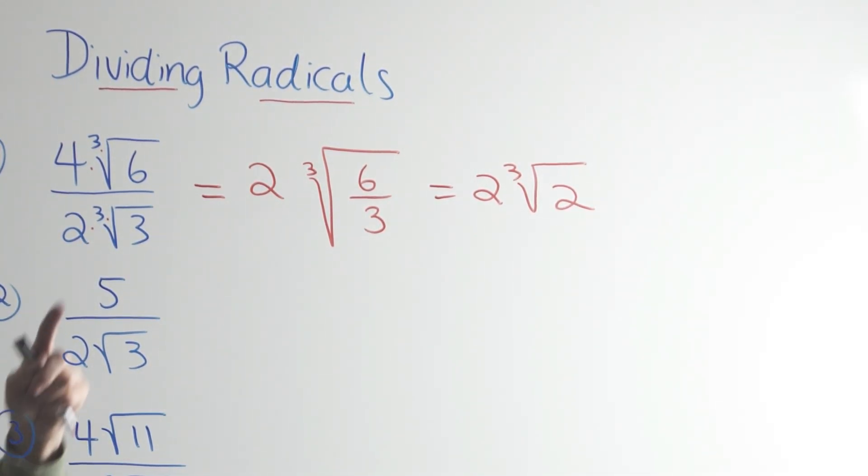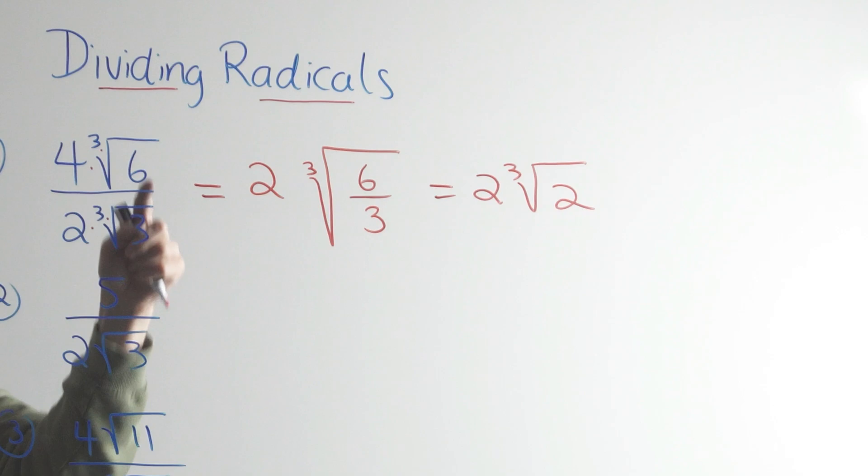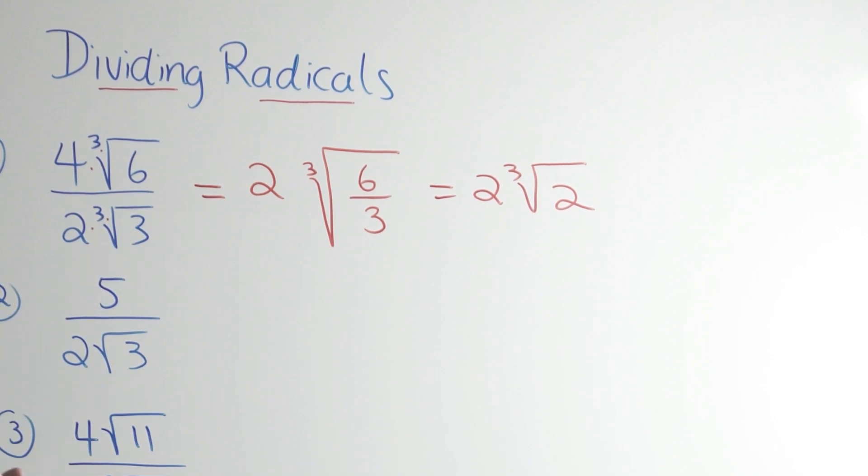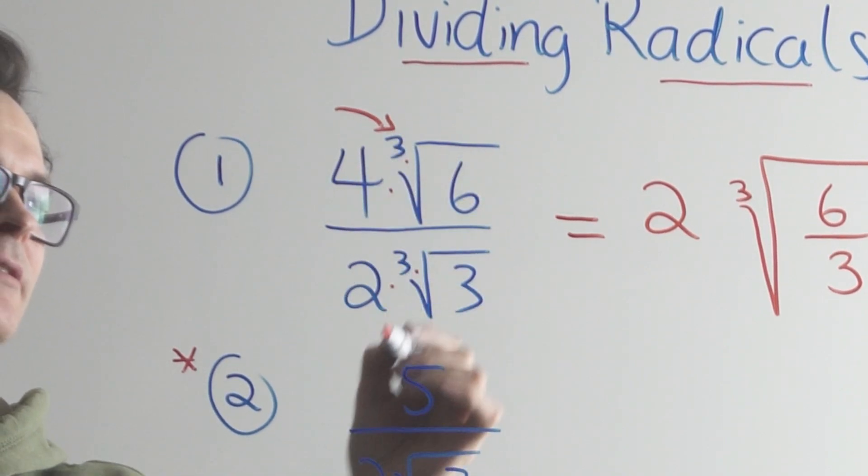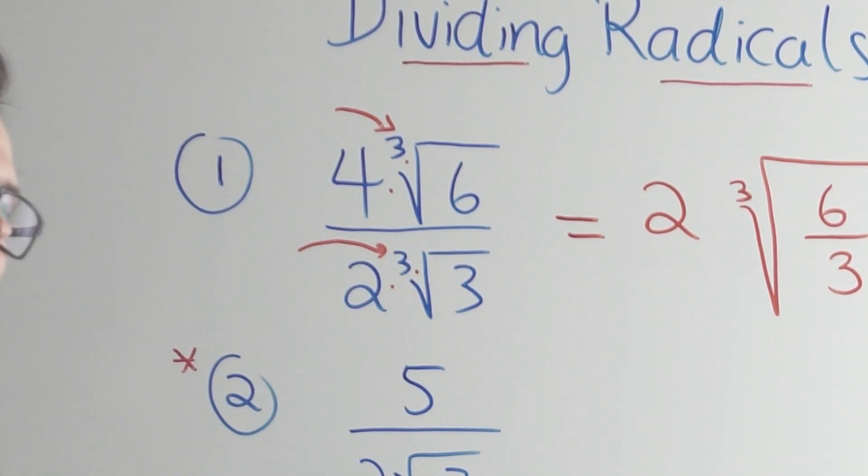So probably the easiest way, the coefficients divide, and then the numbers under the radicals are actually called radicands. They divide as well, only if the index numbers are exactly the same. Do you see they're both cube roots?